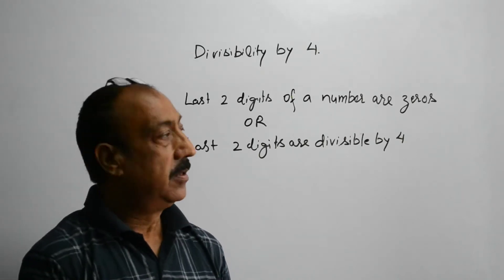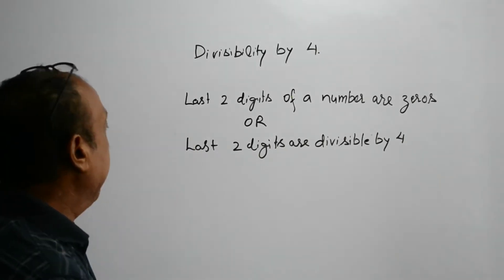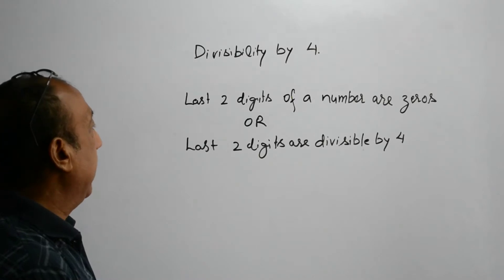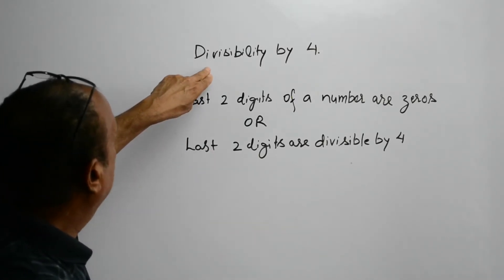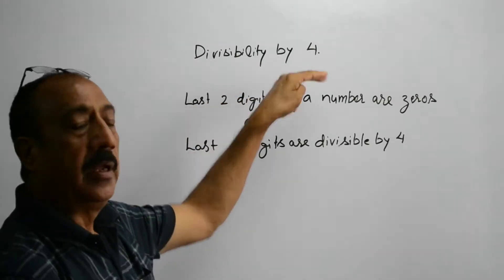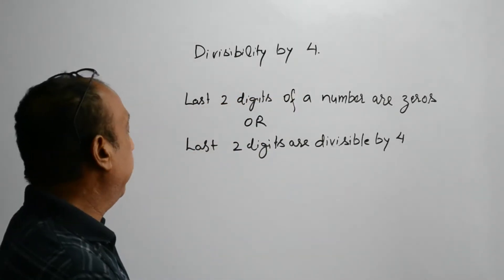To find out whether a year is a leap year or not, the rule of divisibility by 4 is going to help us in a big way.